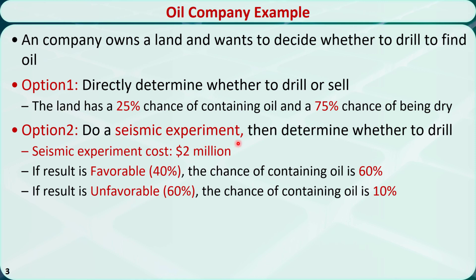Option 2: they can do a seismic experiment and then decide whether to drill or sell the land. A seismic experiment is conducted by creating a shock wave and sending it into the ground. The reflected shock wave will be collected and analyzed — the reflection from oil will show certain patterns. Although the results are not 100% accurate, we can use a seismic experiment to improve the preliminary estimates of the probabilities of whether the land contains oil. The cost of the seismic experiment is $2 million. There is a 40% chance that the result will be favorable and 60% chance that the result will be unfavorable. If the result is favorable, the chance of containing oil is 60%, significantly improved from 25%. If the result is unfavorable, the chance of containing oil is 10%.